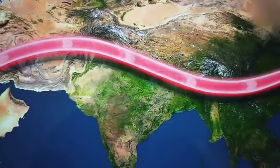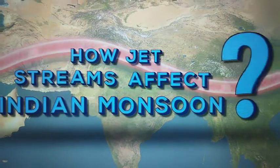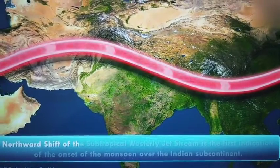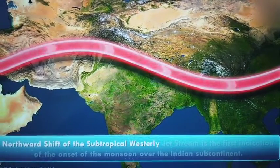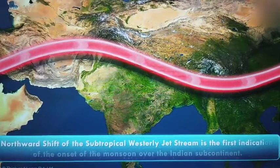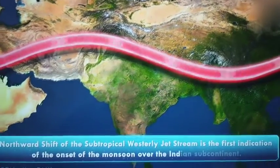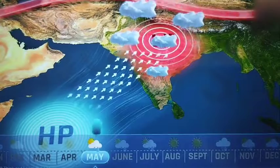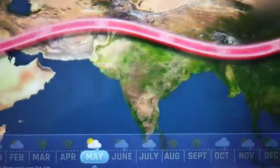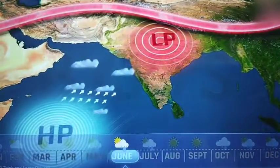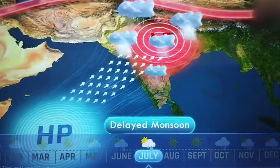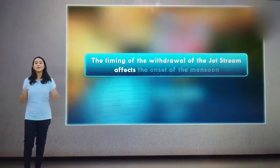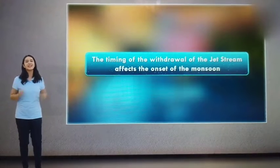Now, let's see how the jet stream affects monsoon and its occurrence. Many scientists believe that the northward shift of the subtropical westerly jet stream is the first indication of the onset of the monsoon over the Indian subcontinent. If the jet stream withdraws earlier, then the monsoon also arrives early. If the jet stream withdraws later, then the monsoon is also delayed. Thus, the timing of the withdrawal of the jet stream affects the onset of the monsoon in the Indian subcontinent.